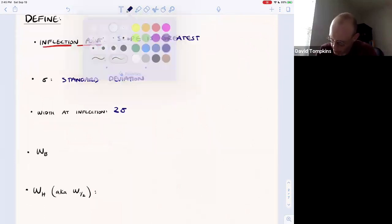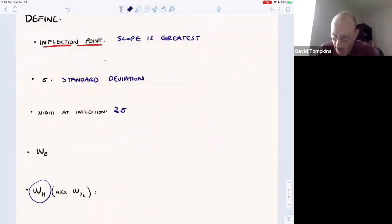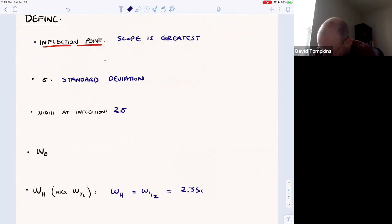So you'll see this represented as width sub half or width one half, and there the width one half is equal to 2.35 times the standard deviation.